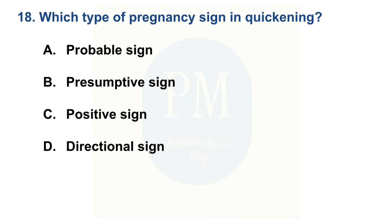Which type of pregnancy sign is quickening? Option A: Probable sign. Option B: Presumptive sign. Option C: Positive sign. Option D: Directional sign. The correct option is Option B — Presumptive sign.